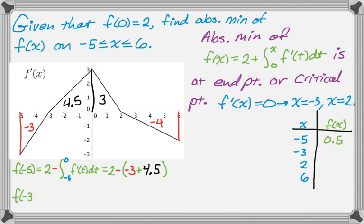And then when we get f of negative 3, again, we have to switch the bounds and change the sign. And then we get 2 minus 4.5, which gives us negative 2.5. That makes sense to me, right? Because looking at the graph of f prime, I can see that negative 3 is a relative minimum. So the value at negative 3 should be less than the value at negative 5. That makes a lot of sense. And it is.